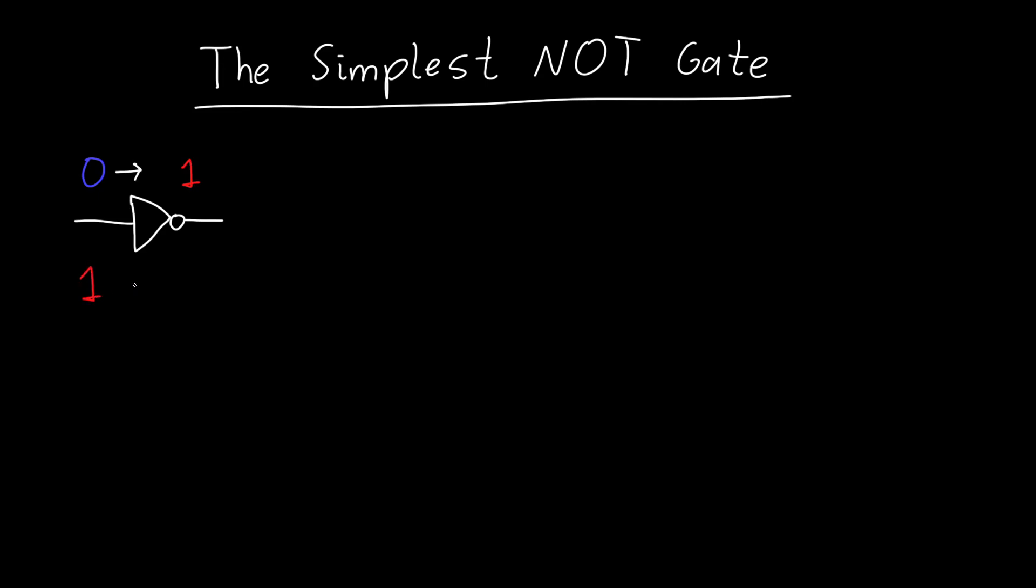And when we feed it a one at the input, the output is a zero. And so we can draw this in what we call a truth table, where we plot the input against the output. And so if we have an input of a zero, our output is one. If we have an input of one, our output is zero.